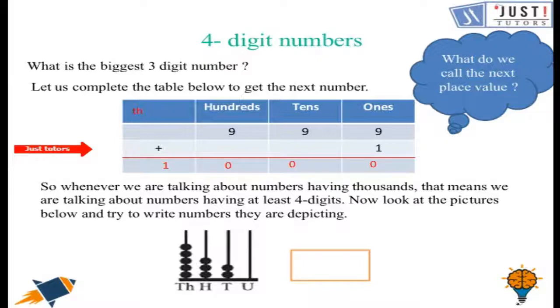So whenever we are talking about thousands, that means we are talking about numbers that has at least 4 digits in it. Now let us give it a try to this question. It is an abacus. And by looking at the abacus, try to find out the number which it is trying to depict here. So as you can see, in the thousands column, it has got 5 beads. So we will write 5 at the thousands column.